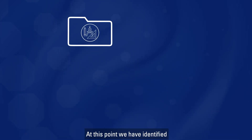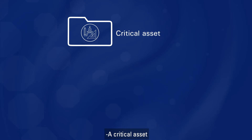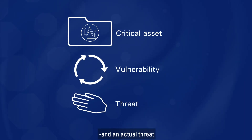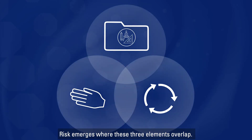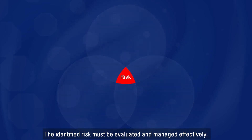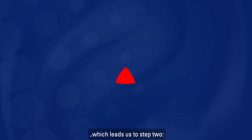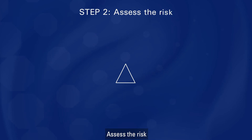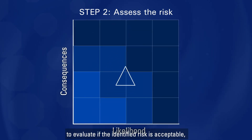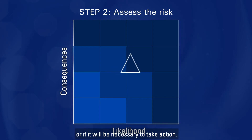At this point we have identified a critical asset, a relevant vulnerability, and an actual threat. Risk emerges where these three elements overlap. The identified risk must be evaluated and managed effectively. This leads us to Step 2: assess the risk. Apply a risk assessment methodology to evaluate if the identified risk is acceptable or if it will be necessary to take action.